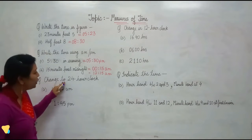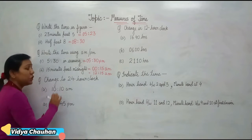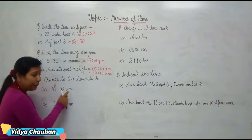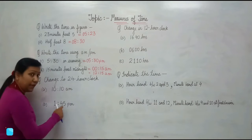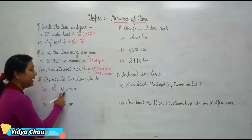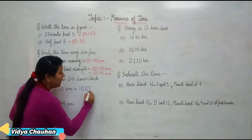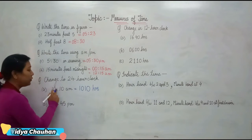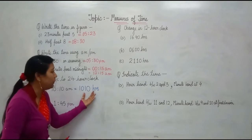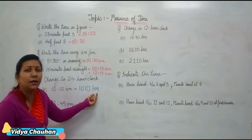After this, the third question, in which you have to change the 12-hour clock to 24-hour clock. If it is AM, then you directly have to write the value in hours. If it is PM, then you have to add 1200 hours to the given time. So in the first part, it is 10:10 AM. Just because it is AM, you write the value in the same manner — 1010 — and you remove the two dots. So it becomes 1010 hours, and now your time is in 24-hour clock.